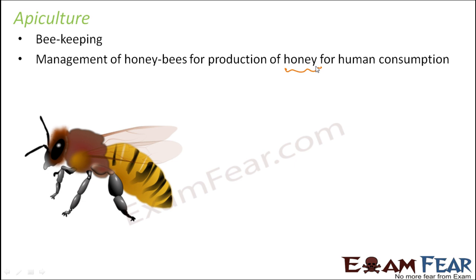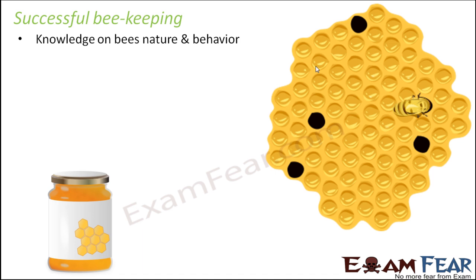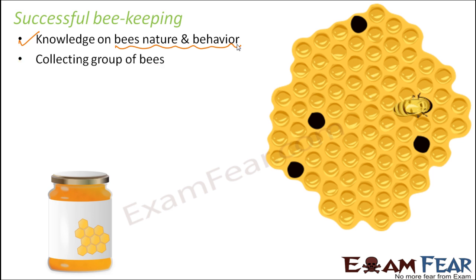So what are the things that need to be taken care of in order to manage the beehives well, so that we can get a good quality honey? Some points to ensure successful beekeeping: knowledge of bees' nature and behavior is very important. When dealing with honeybees, it is important to understand their life cycle, food habits, and behavior.